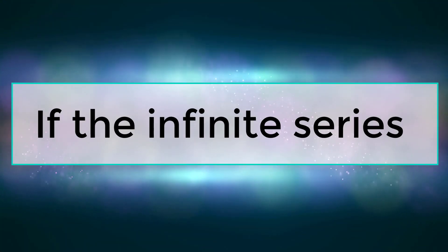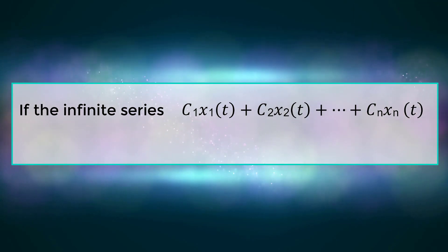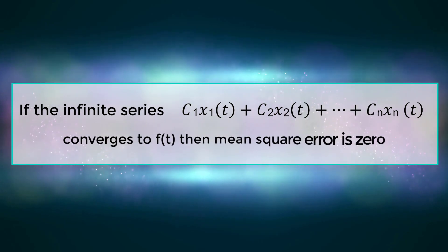If the infinite series C1x1(t) + C2x2(t) + ... + Cnxn(t) converges to f(t), then the mean square error is zero.